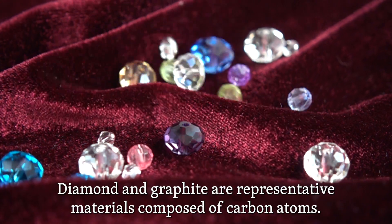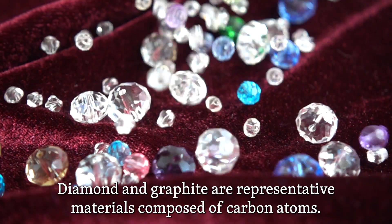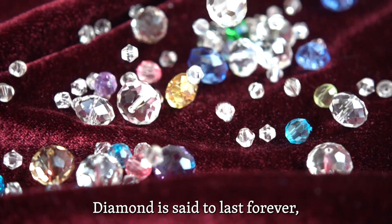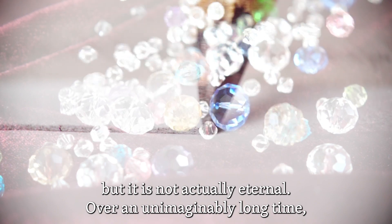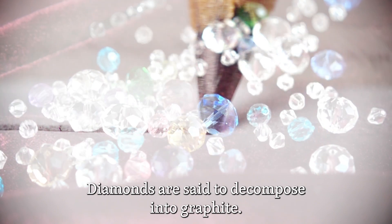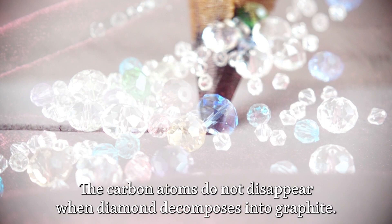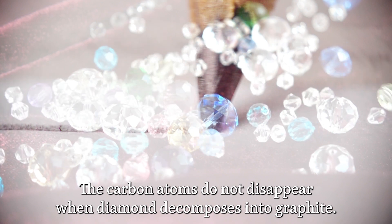Diamond and graphite are representative materials composed of carbon atoms. Diamond is said to last forever, but it is not actually eternal. Over an unimaginably long time, diamonds are said to decompose into graphite, another carbon allotrope. The carbon atoms do not disappear when diamond decomposes into graphite.